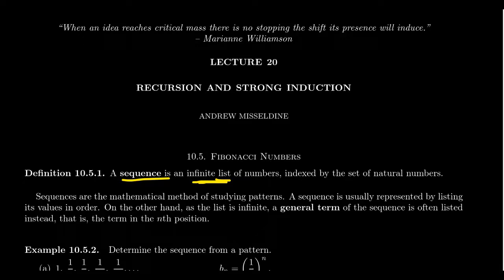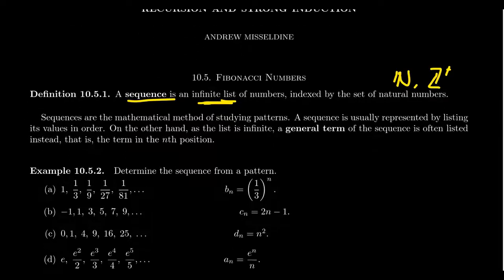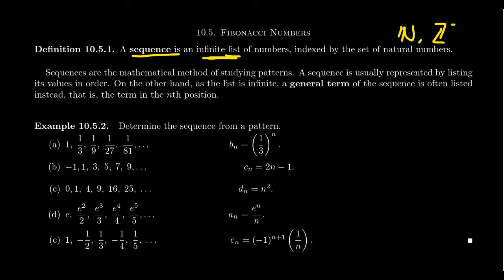A sequence is typically indexed by the set of natural numbers, but a subset of the natural numbers might be more appropriate. For example, instead of using the full set of natural numbers which includes 0, 1, 2, 3, 4, etc., maybe you only index it using the positive integers, because it could be that 0 itself might be problematic — like if you're looking at the harmonic sequence. We just need some subset of natural numbers as our index set. Typically we start with 0 or 1, depending on the circumstance.